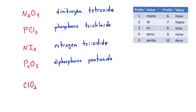Normally the element furthest to the left is written first, and that's true for almost all compounds except those containing hydrogen, like water H2O. It's also not true for certain compounds like ClO2 — for historical reasons, the Cl is written first, so this is chlorine dioxide.